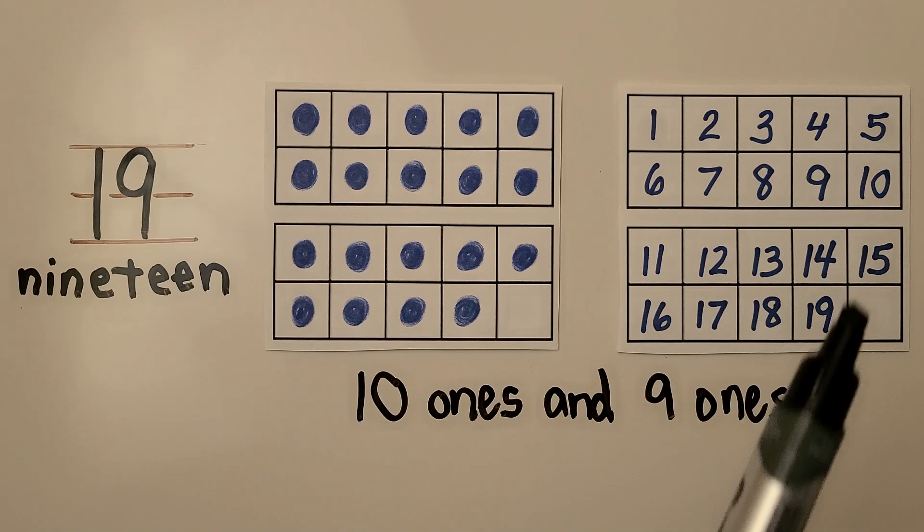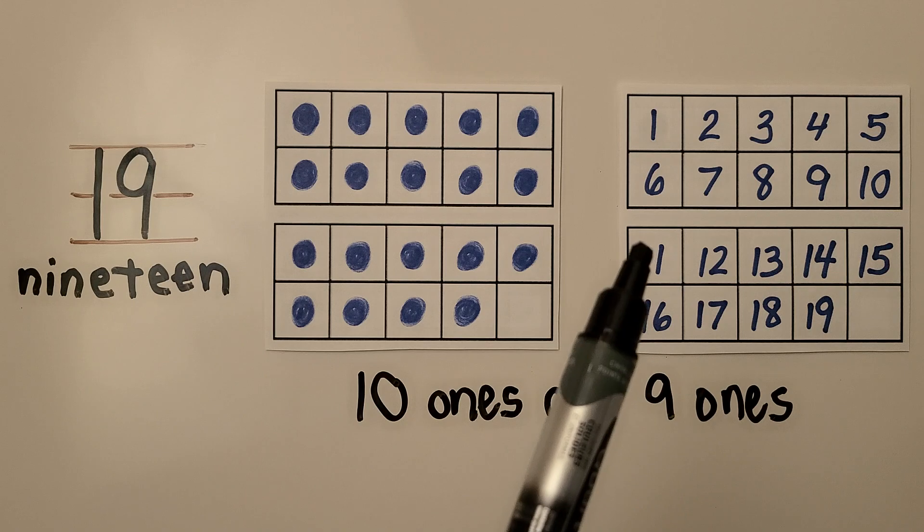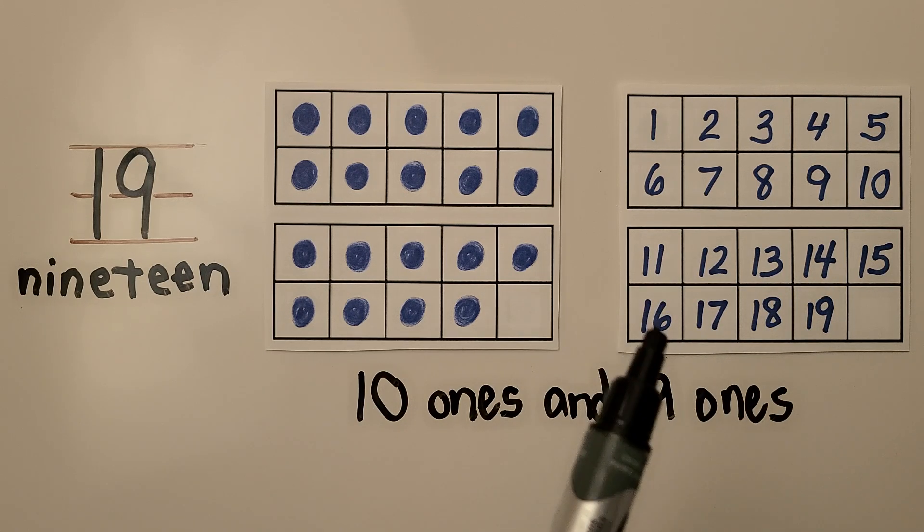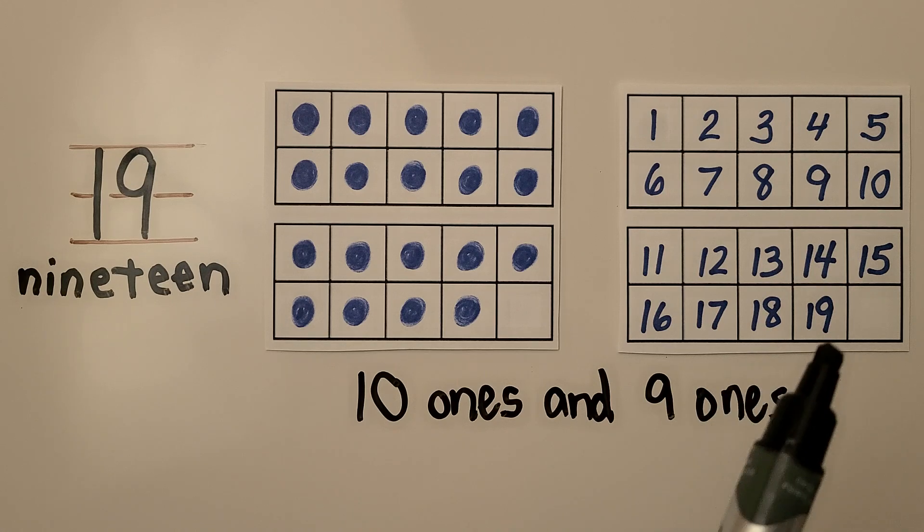We can count on from the 10, 11, 12, 13, 14, 15, 16, 17, 18, 19. 19 is 10 ones and 9 ones.